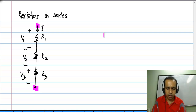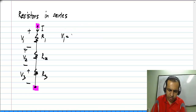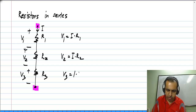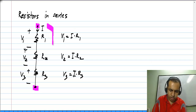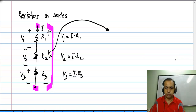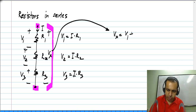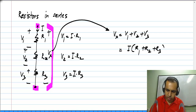I will call that current I. By Ohm's law we know that V1 is I times R1, V2 is I times R2, and V3 is I times R3. The total voltage between these two terminals, if I call that Vx, we know that it is the sum of the individual voltages. So, Vx is V1 plus V2 plus V3, which is I times R1 plus R2 plus R3.